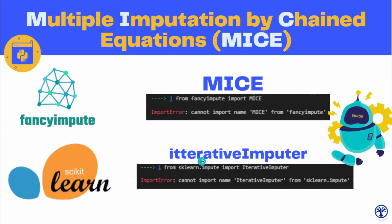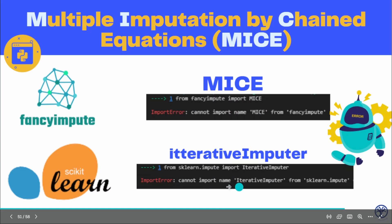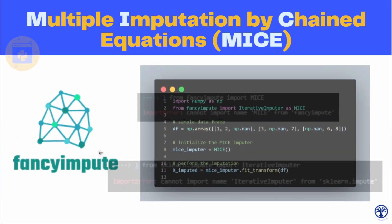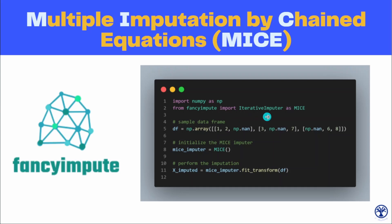In Scikit-learn, MICE has been renamed as IterativeImputer, so if you import 'from sklearn.impute import IterativeImputer' you will again see an import error. Why are we getting this error? In FancyImpute, MICE has been renamed as IterativeImputer, and in sklearn the IterativeImputer is assigned as an experimental module or experimental class. You can use MICE in FancyImpute by importing IterativeImputer and aliasing it as MICE — just like we do 'import numpy as np'. You then initialize the MICE imputer and use fit_transform to actually impute the missing values.